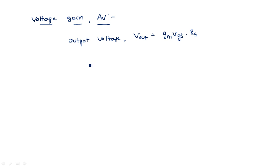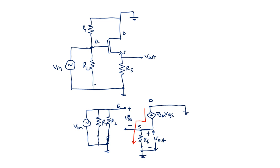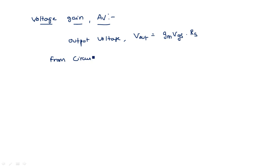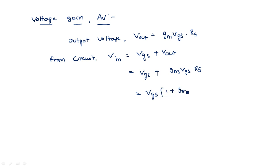To find Av, we need to write Vgs in terms of Vin. Vgs is the voltage from gate to source, and Vin is the voltage from gate to ground. From gate to ground there are two voltages: Vgs and Vout. So from the circuit, Vin equals Vgs plus Vout, which equals Vgs plus Gm·Vgs·Rs, which equals Vgs times (1 + Gm·Rs). Therefore, Vgs equals Vin divided by (1 + Gm·Rs).